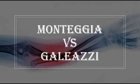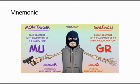In this video, I'm going to be talking about Monteggia versus Galeazzi fracture. We can remember both of them by using this mnemonic, which is MU and GR. MU stands for Monteggia and Ulna.